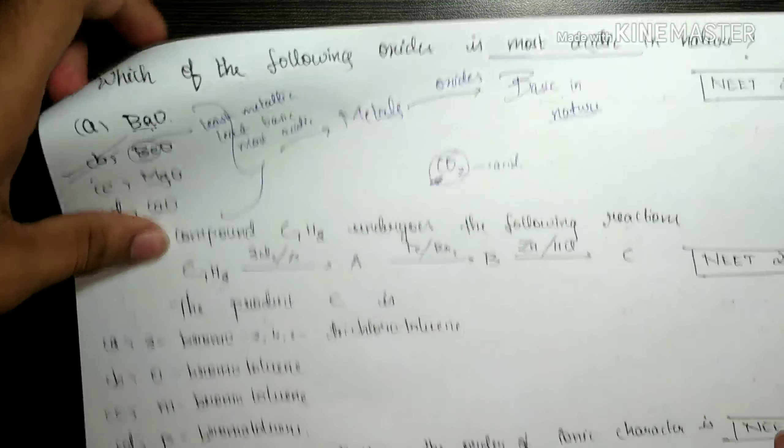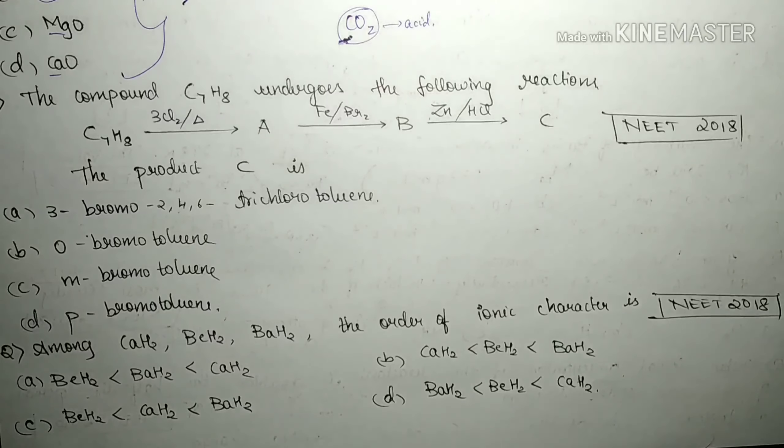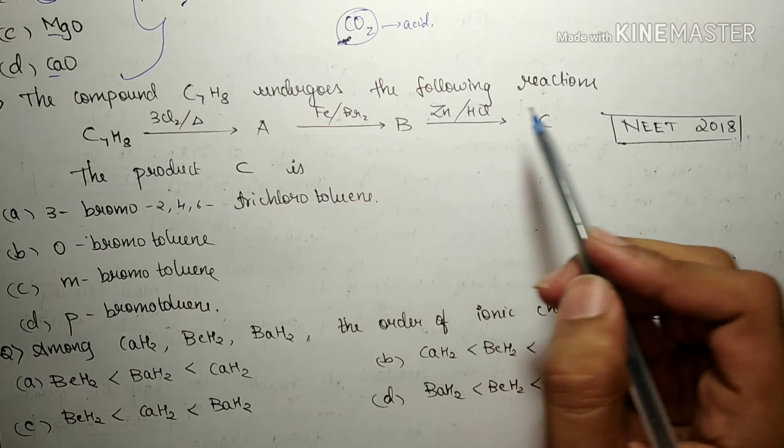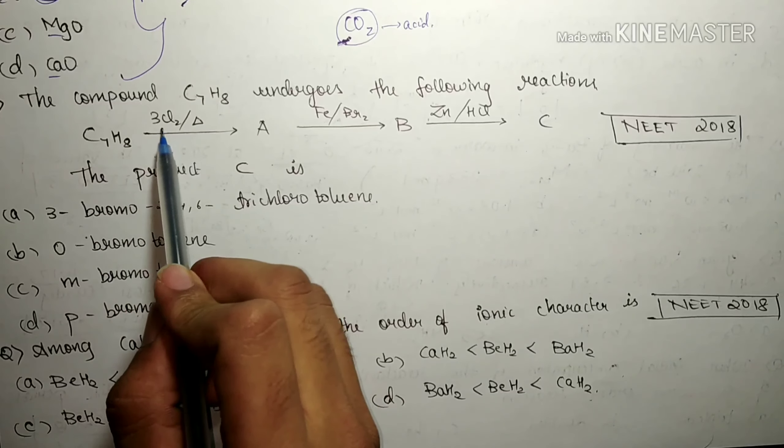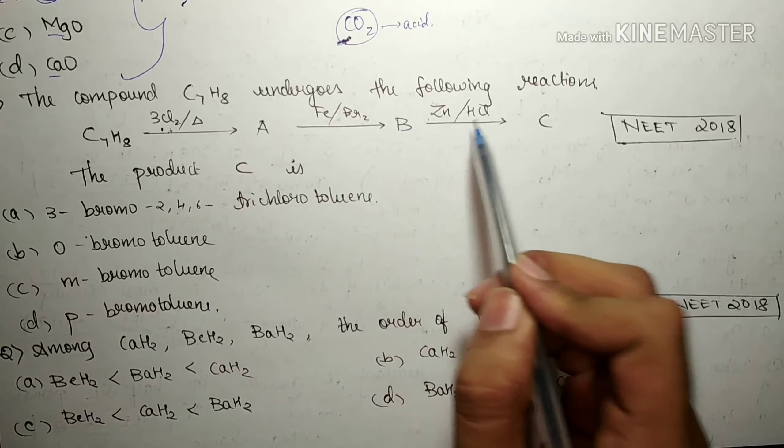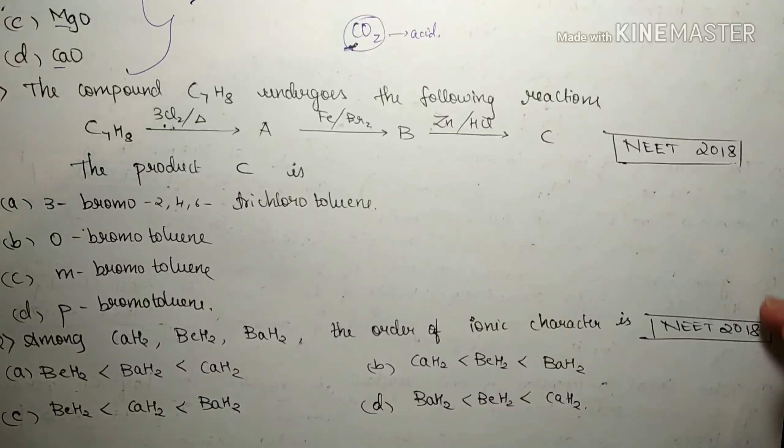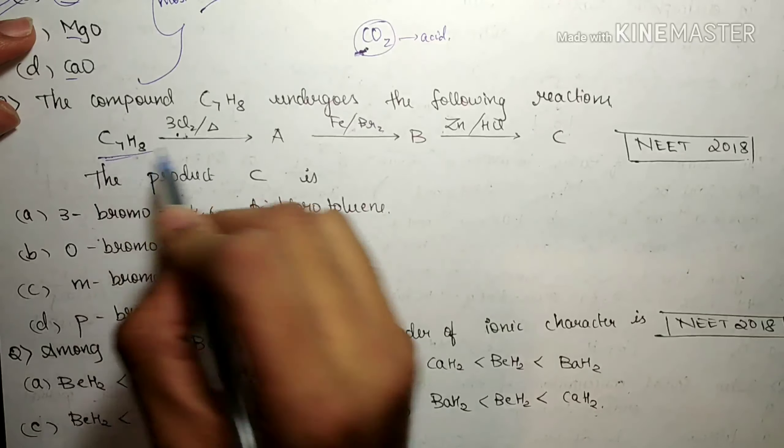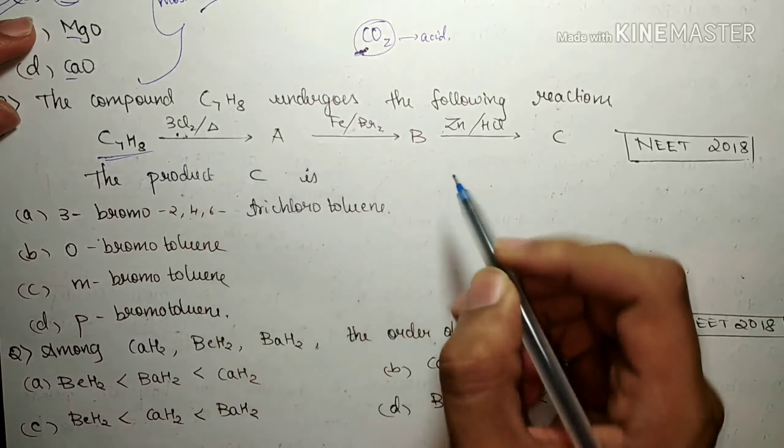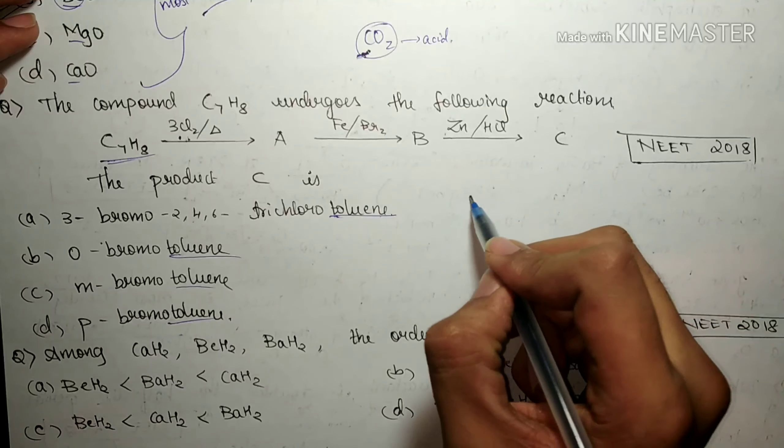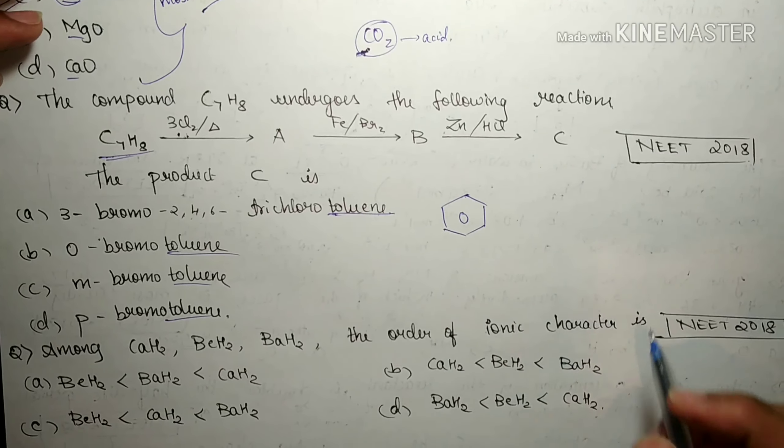Let's see the next question which says, the compound C7H8 undergoes the following reactions. C7H8 undergoes three times of Cl2 with heat and FeBr2 and then Zn HCl. In that case, what do we do? So how do we begin with this? First, let's draw the structure of C7H8.